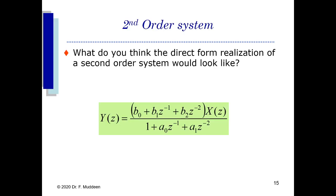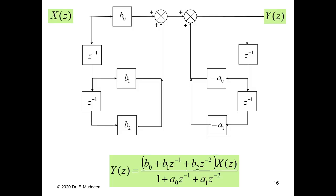For a second-order system, the general equation is given by the generic transfer function. Looking at just the inner portion of the second-order block diagram, it looks very similar to our first-order system — the first-order system is actually a building block for the second-order system. The second-order system adds additional z⁻¹ delays and new constants, with z⁻¹ multiplied by z⁻¹ creating the z⁻² delay line.